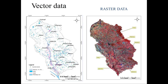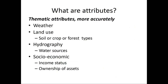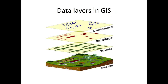On the right side you have raster data, which looks color-coded in some way, and this is generated primarily from satellites. In fact, most of the satellite-derived imagery is presented as raster data. What are attributes? You should call them thematic attributes. For purposes in agriculture, weather is an attribute. Land use can be an attribute. Hydrography is an attribute. Socio-economic parameters, such as income status and ownership of assets, can be thematic attributes.